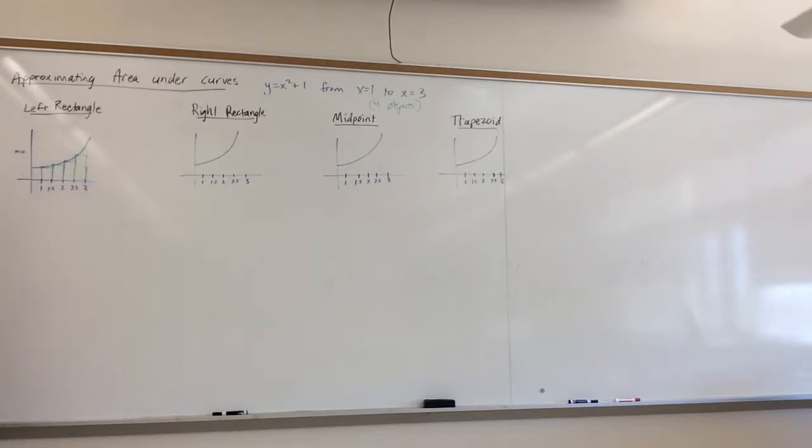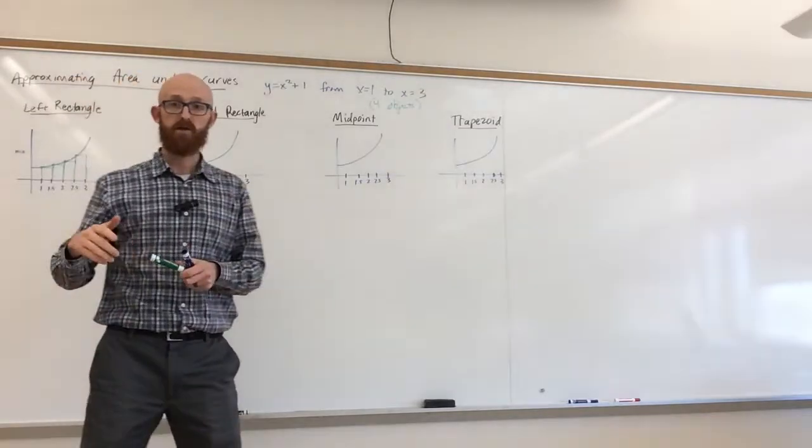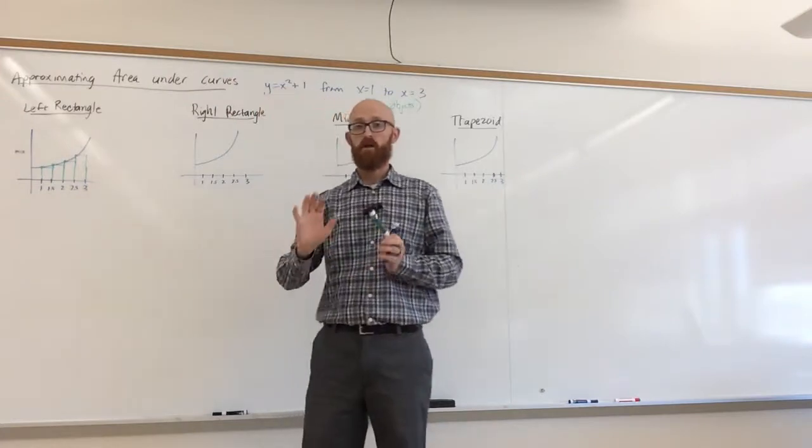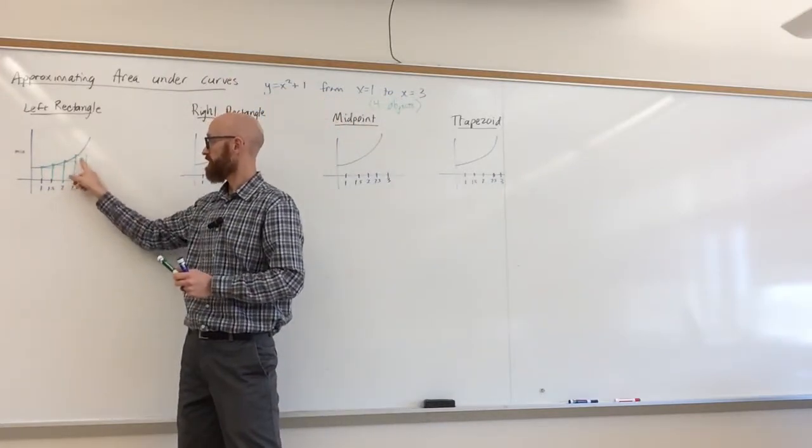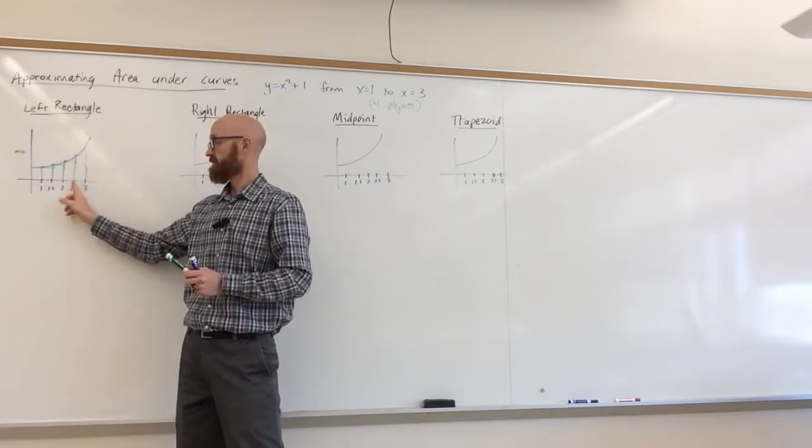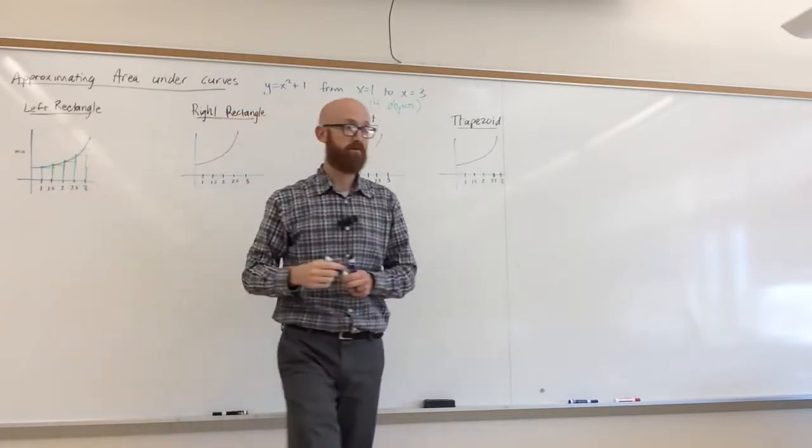You can see that this is definitely an under approximation. That's because the function is going up, so the left-handed rectangles are going to always end up under the curve. So for example, this rectangle, its height is determined by what f of 2.5 is.